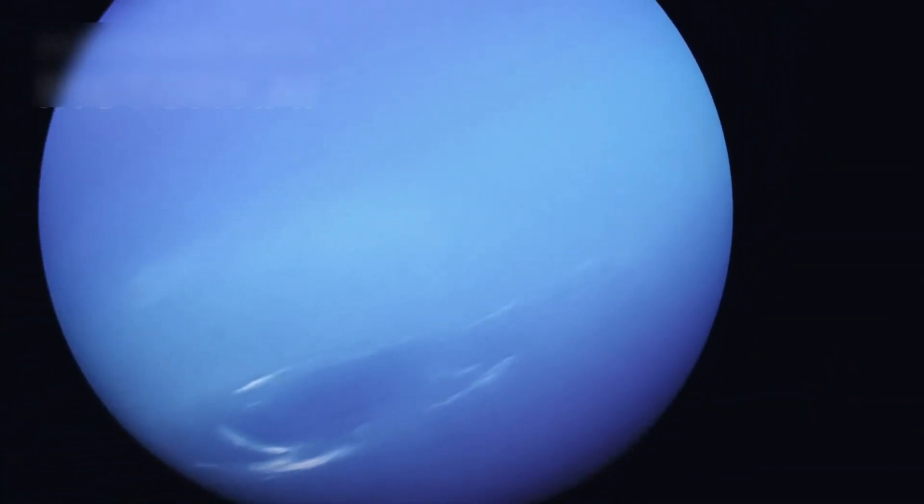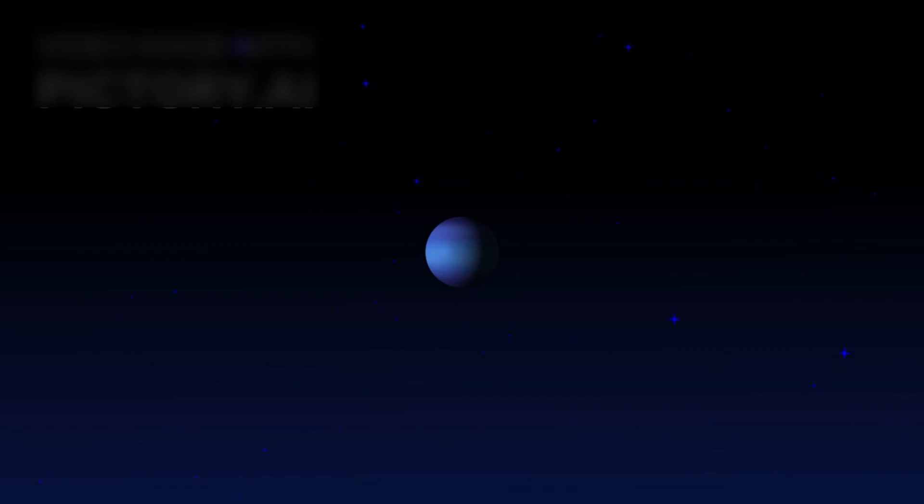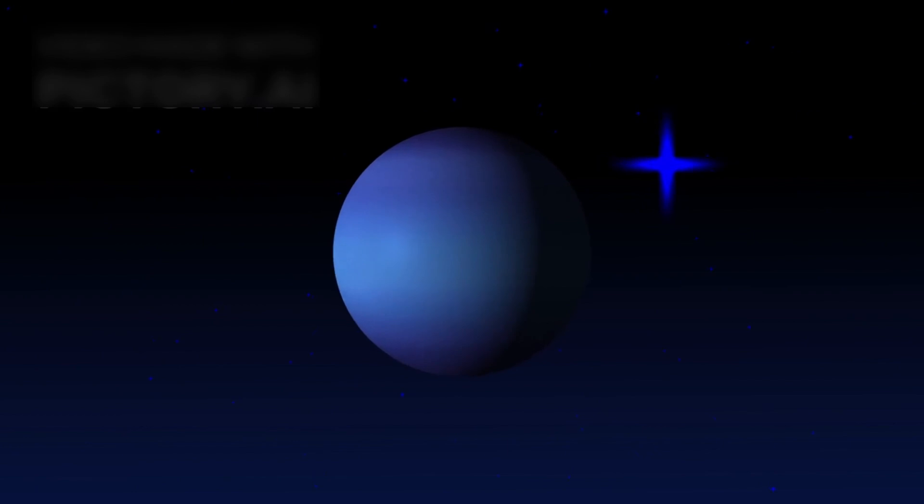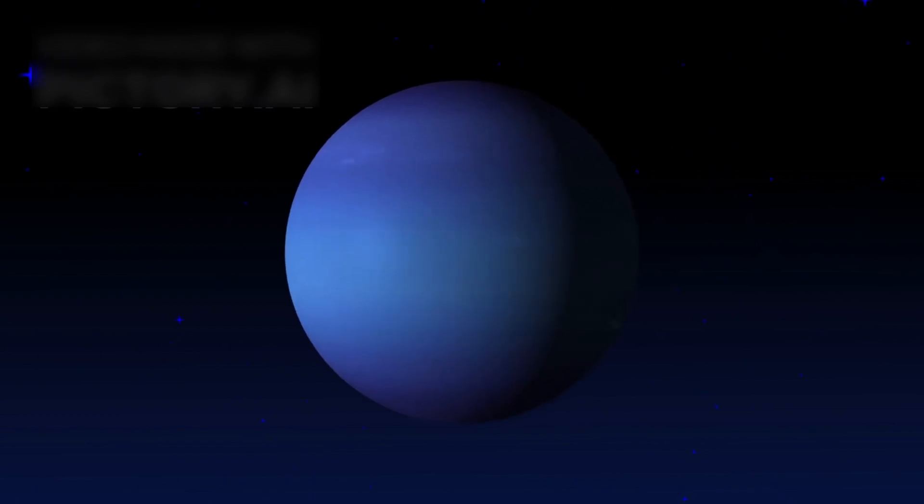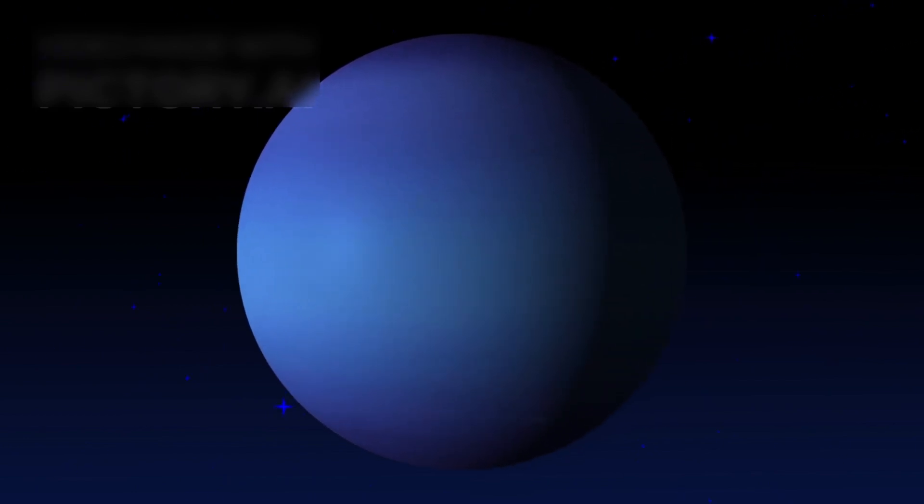For years, Neptune was seen as a quiet blue world at the edge of our solar system. Discovered in 1846 not by sight, but by the strange movements of Uranus, Neptune was confirmed through mathematics before telescopes ever found it. Since then, only one spacecraft, Voyager 2, has visited Neptune in a brief 1989 flyby that showed us its swirling storms, fierce winds, and its signature deep blue color.